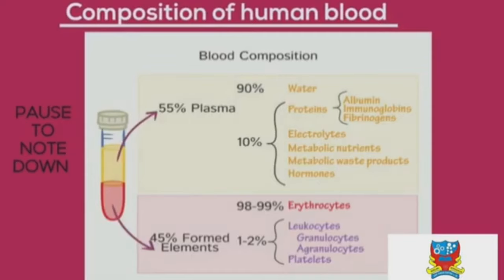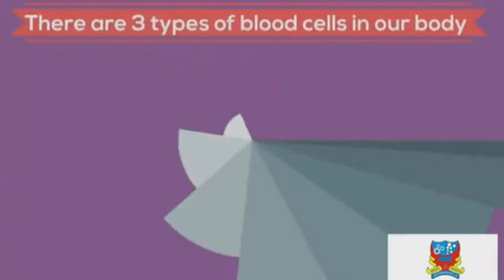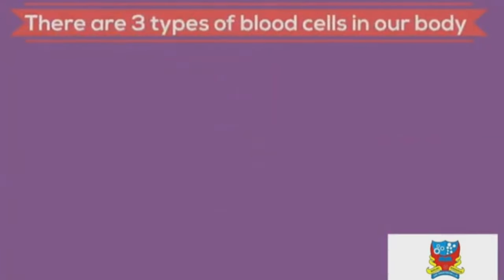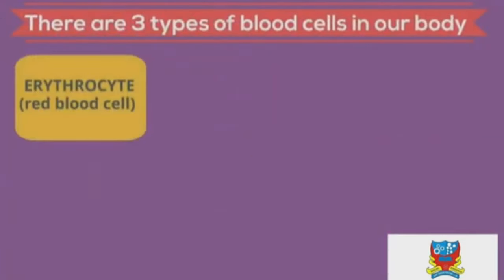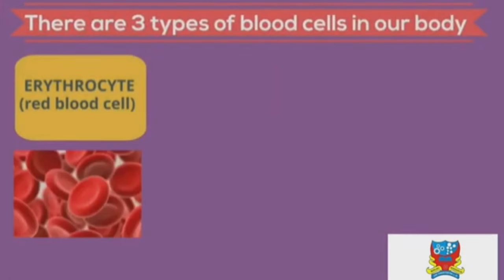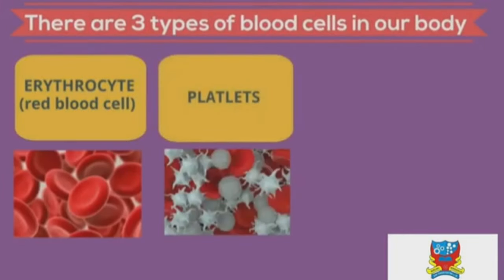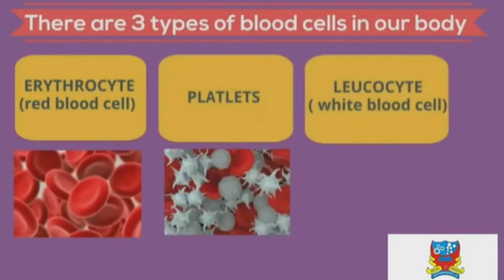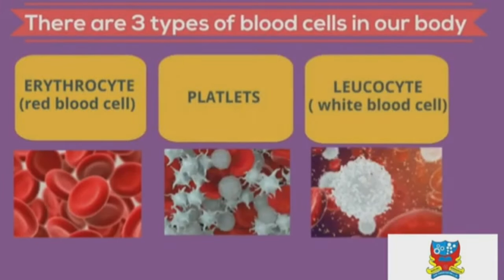Now let's look at the composition of human blood. There are three types of blood cells: erythrocytes (red blood cells), platelets, and leukocytes (white blood cells).